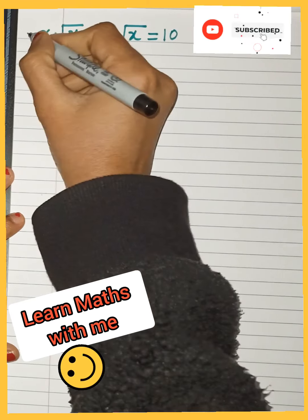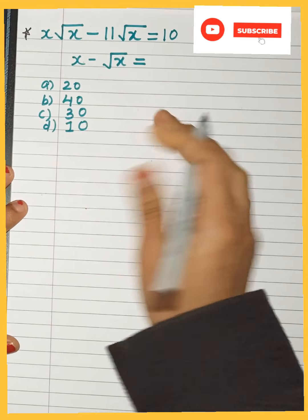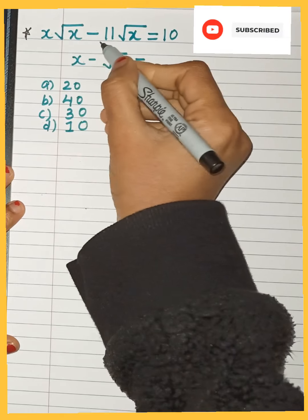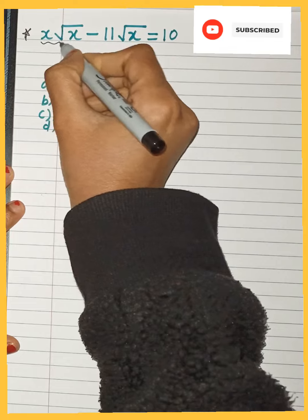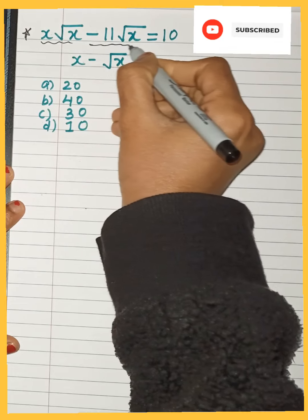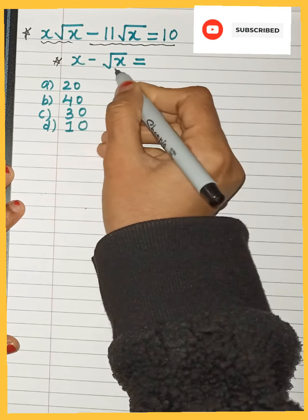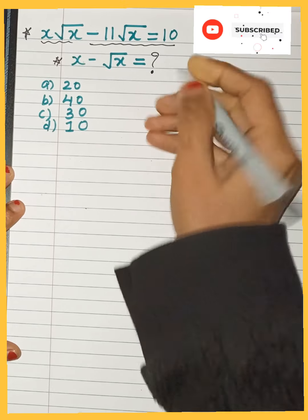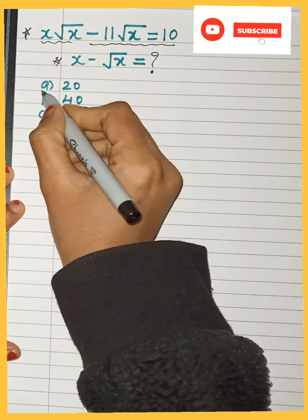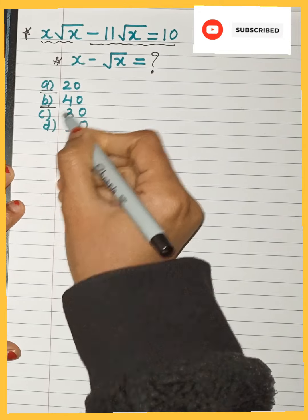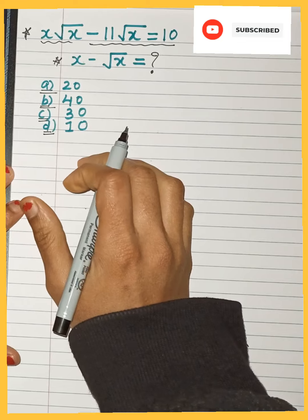Hello everyone. Let's see how we will solve this question. The question is x√x − 11√x = 10. We need to find x − √x. The four options given are 20, 40, 30, and 10.